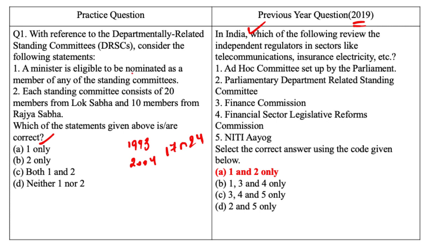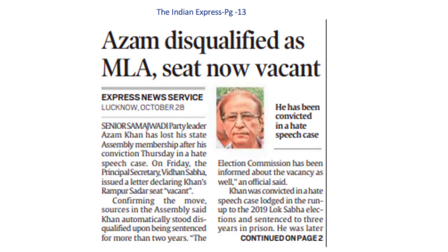Statement one — a minister is eligible to be nominated as a member of any of the standing committees — is incorrect. A minister is not eligible to be nominated as a member of any of the standing committees. In case a member after his nomination is appointed a minister, he ceases to be a member of the committee. The term of office of each committee is one year from the date of its constitution. Statement two is also incorrect: there are a total of 31 members in each standing committee — 21 from Lok Sabha and 10 from Rajya Sabha. Both statements are incorrect, so the correct answer is D, i.e., neither one nor two.